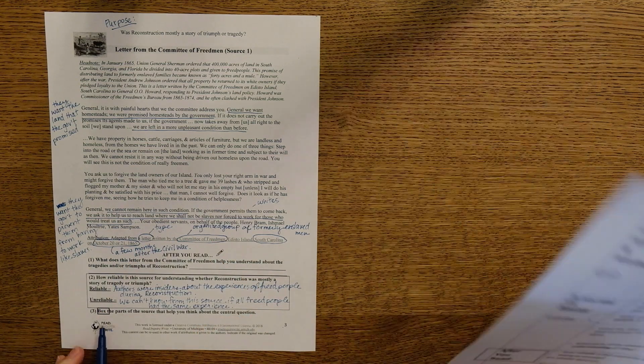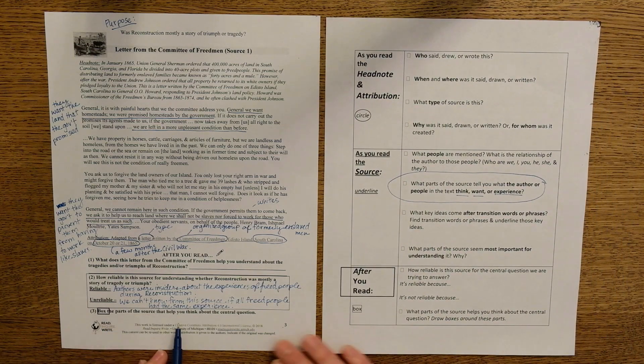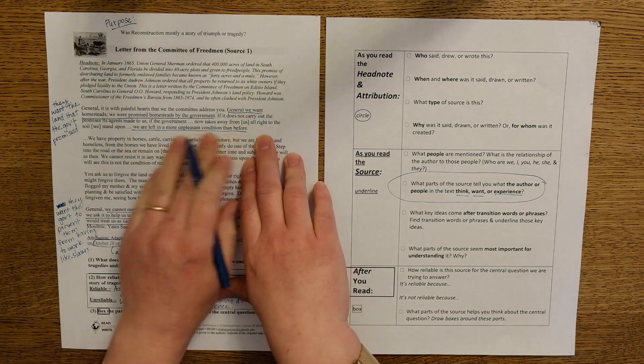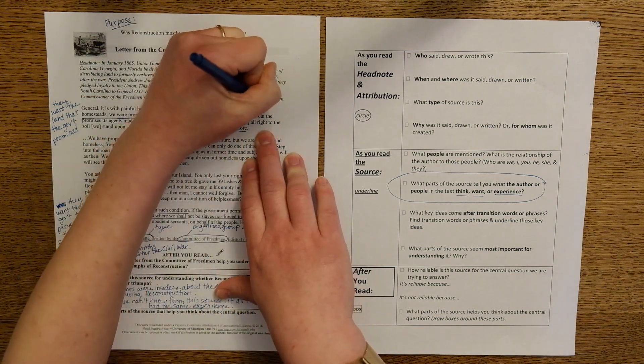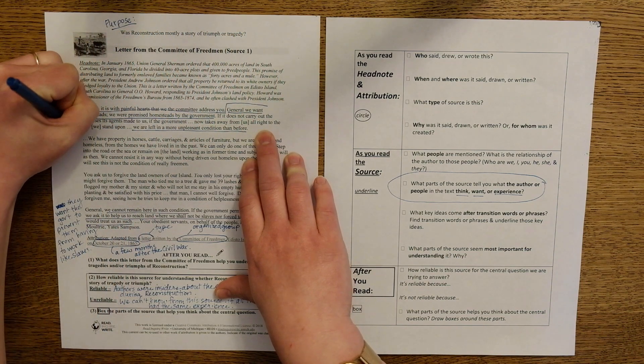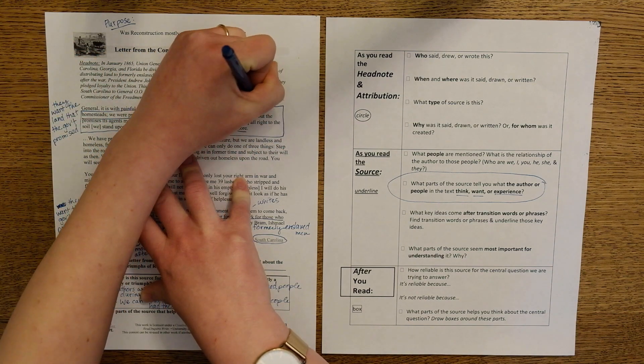All right, last step, number three. It says box the parts of the source that help you think about the central question. I'm going to box what we've already underlined up here in the first paragraph where the authors talk about wanting homesteads that the government promised them. And if they don't get them, they'll be in a worse situation.